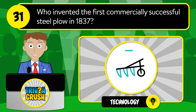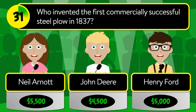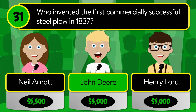Question number thirty-one: who invented the first commercially successful steel plow in 1837? Was it Neil Arnott, John Deere, or Henry Ford? The correct answer is John Deere.